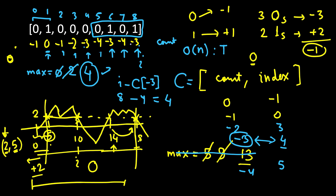Space complexity is theoretically O(n) — if all elements are 0, the sum decreases from minus 1 to minus n, giving n different entries in the map. Similarly if all are 1, we get counts 1 through n. However, in the average case, the running count fluctuates within a small range — in a 100-element array, maybe from minus 10 to plus 10 — so in practice it's much less than n, but theoretically O(n).